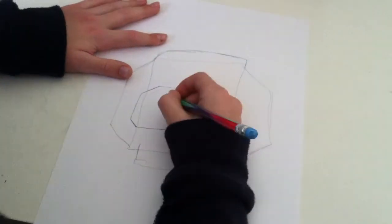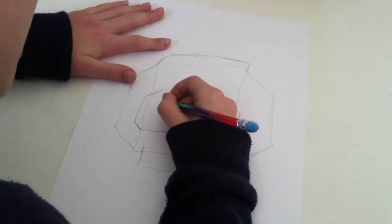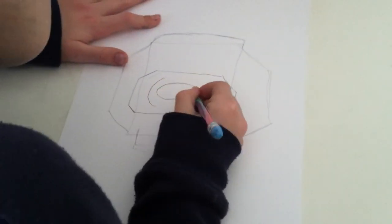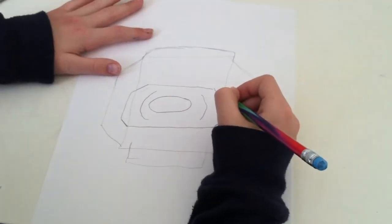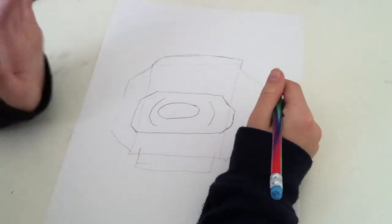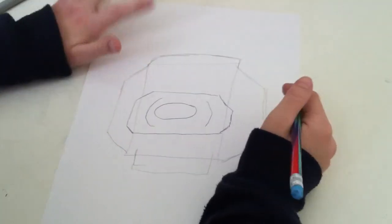And then draw just a C, and then a circle, and then another C. Wait, that kind of looks weird, but it doesn't matter. Just, you can delete it, erase it if you want to.